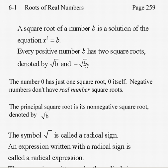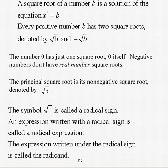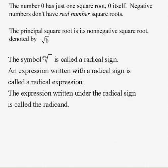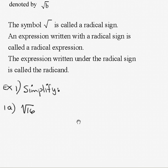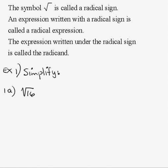When we want the other one, we will use the notation we introduced before, the opposite of the square root of b. For vocabulary, it's important that you know that this symbol is called the radical sign. An expression written with the radical sign is called a radical expression. And the expression written under the radical sign is called the radicand.